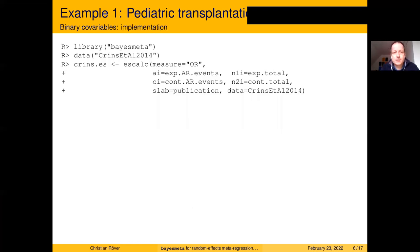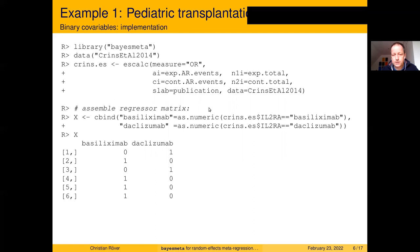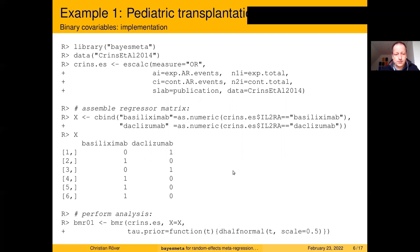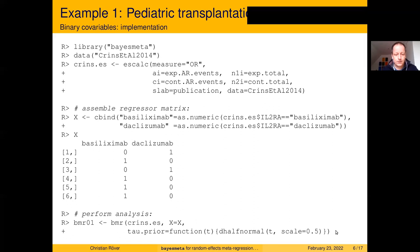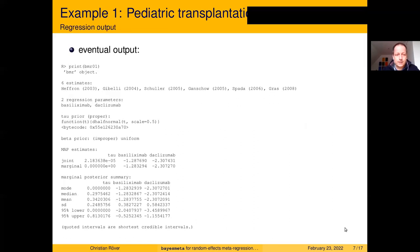The implementation in R looks like this: we load the package, load the dataset, compute the log odds ratios and standard errors, then specify the regressor matrix — two columns, six rows, for two parameters and six studies. To perform the analysis we call the bmr function, assign results to a bmr01 object, supply the estimates and standard errors, supply the regressor matrix X, and specify a prior for the heterogeneity. If omitted, the default uniform heterogeneity prior is used.